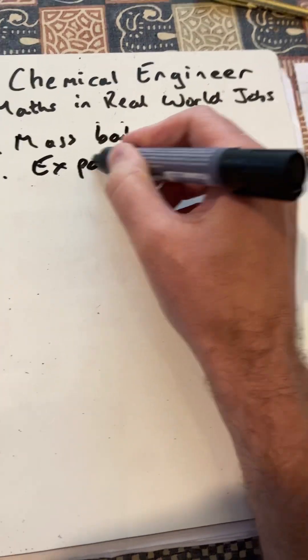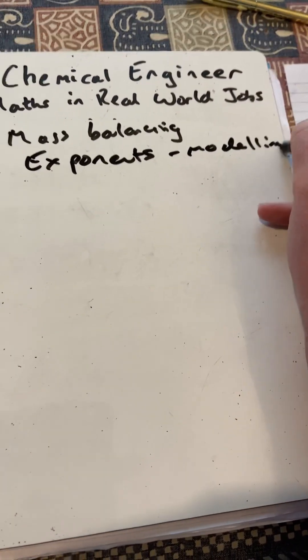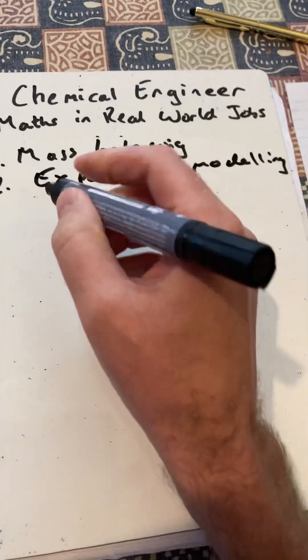They need to know exponents, so indices or powers, and that's used when they make models to understand the modelling of a chemical reaction.